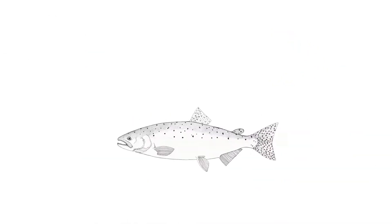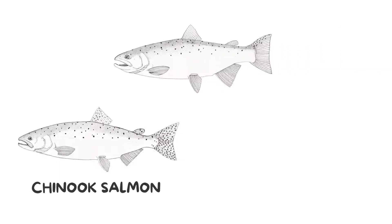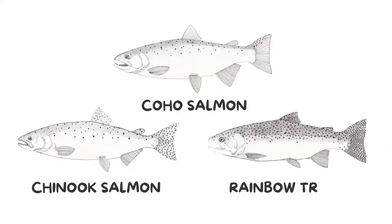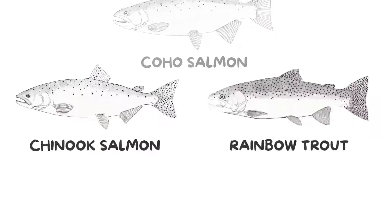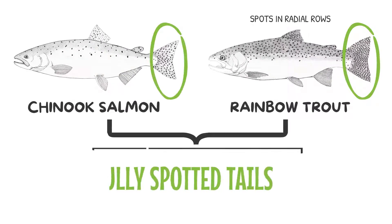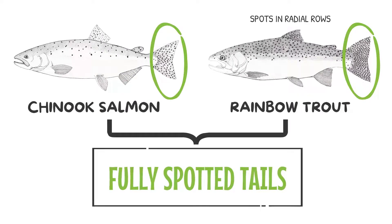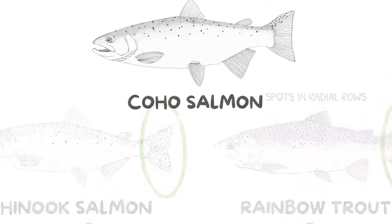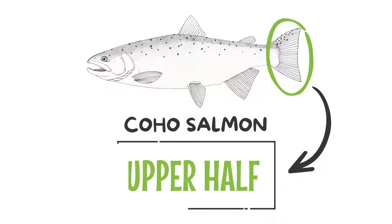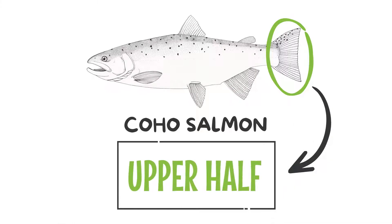To tell chinook salmon, coho salmon, and rainbow trout apart, look at the spot pattern on the tail. Both rainbow trout and chinook salmon have fully spotted tails while coho salmon only have spots on the upper half.